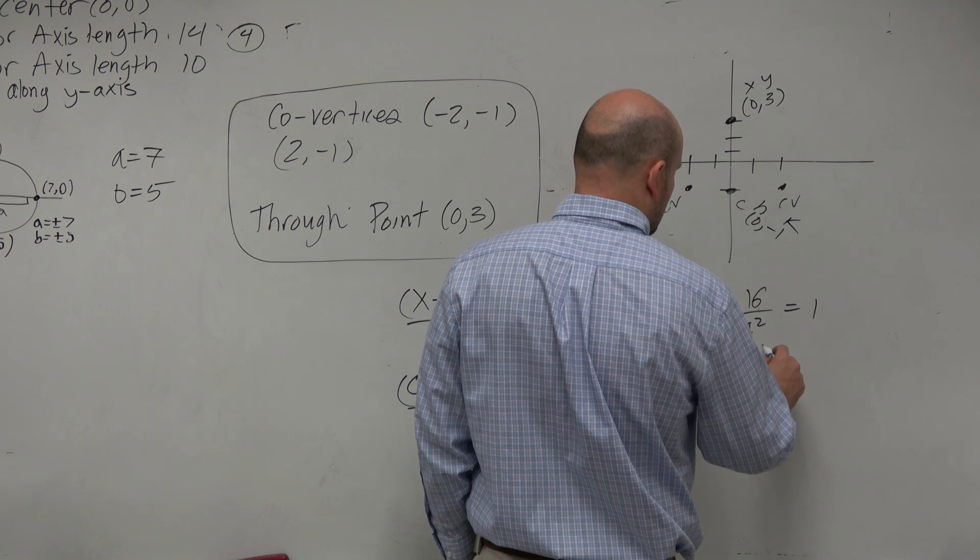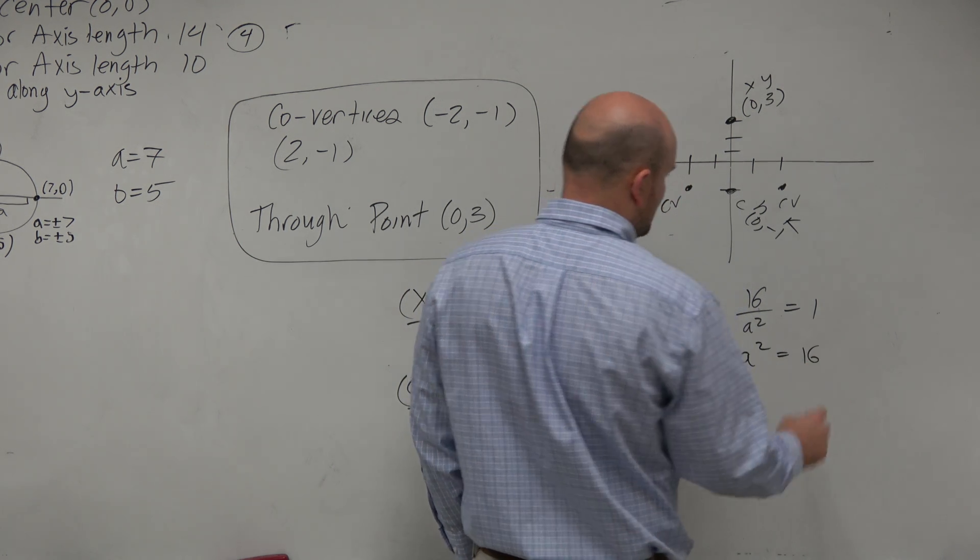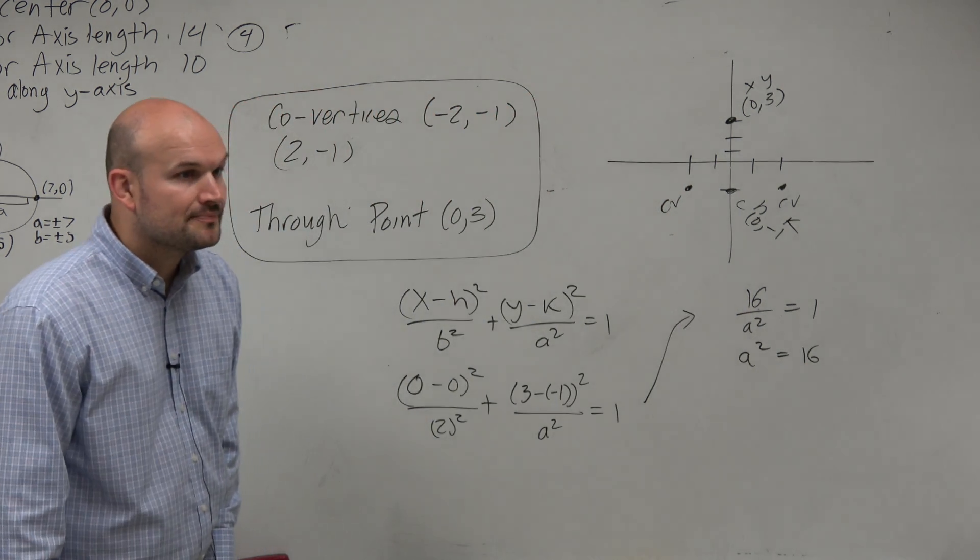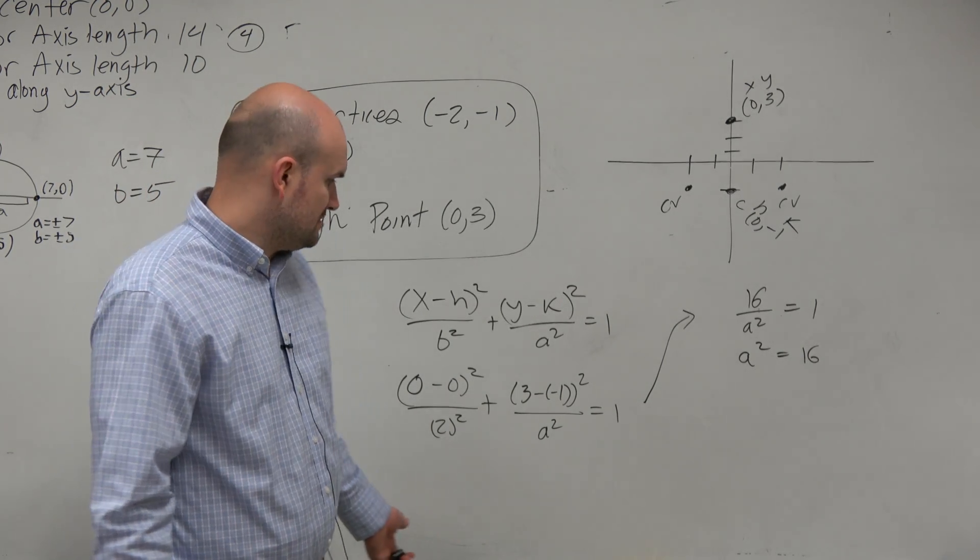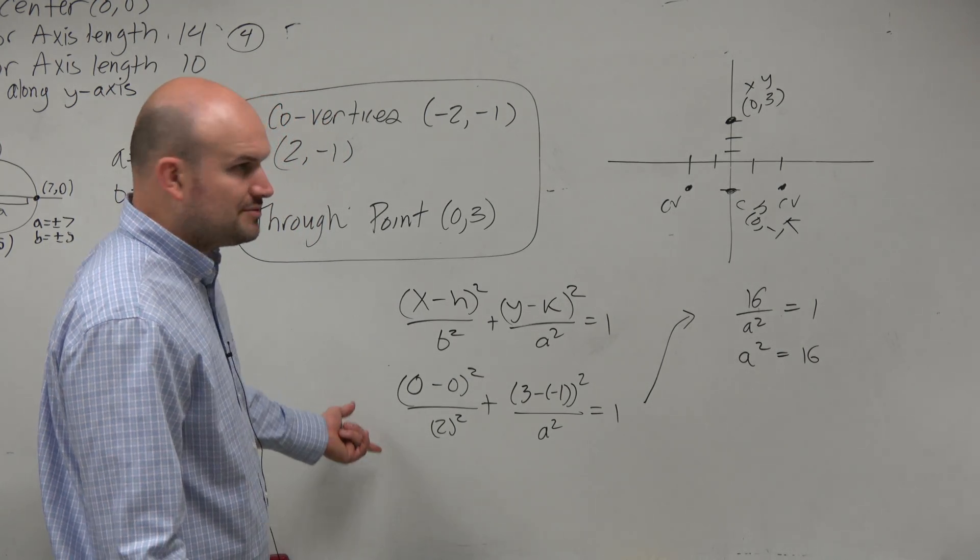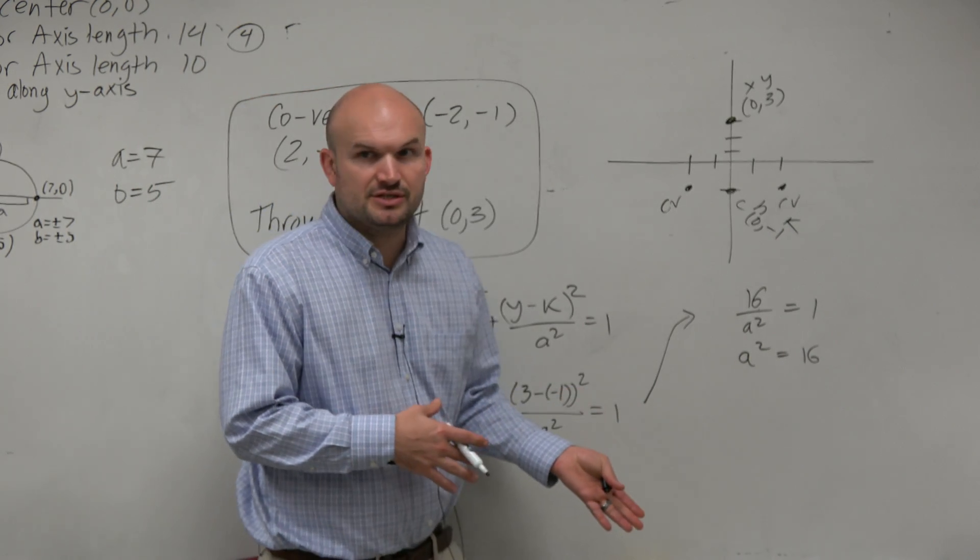So could I say a squared, then, is equal to 16? Just multiplying a squared on both sides. Right? Guess what? I know what a squared is. And I already know what b squared is. Can I now just plug that information into my formula?